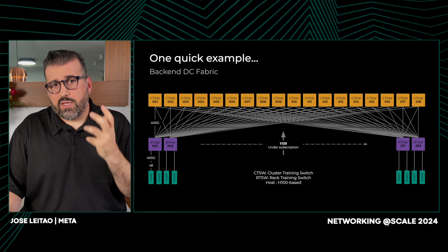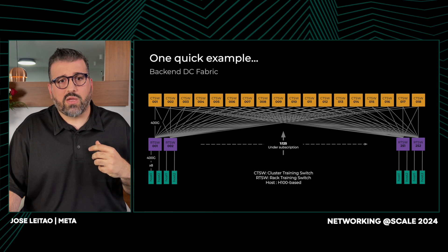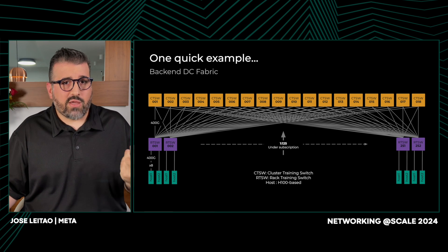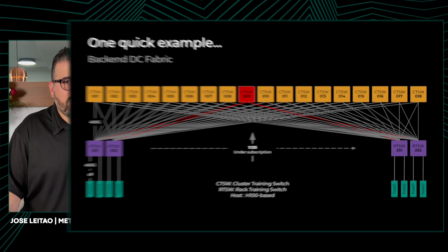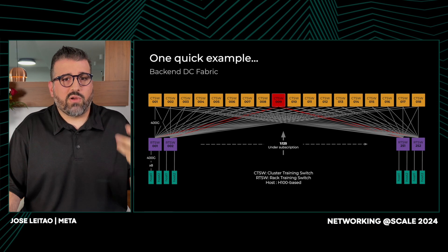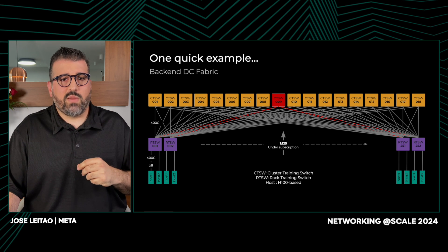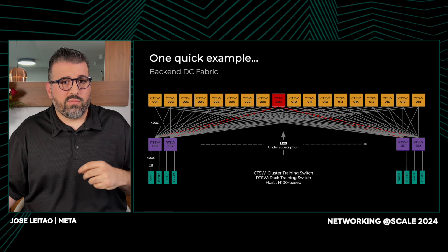To ensure the reliability of the training jobs, it is essential to have a robust solution in place for the rapid detection, triage, and ultimately mitigation of any failures. For example, take the failure of one of the CTSWs — in this case, number nine. This will affect 1/18th of the traffic of all racks, assuming there's no other maintenance happening on the cluster. Upon detecting the failure, the system should immediately trigger an alert for automation, which should then quickly assess the extent of the impact and execute any potential mitigation.